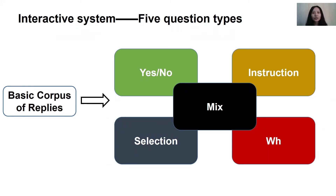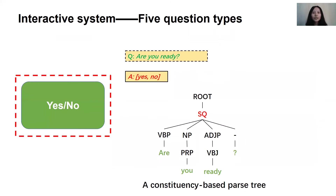We randomly interacted with 10,000 skills and collected the output as the basic corpus of replies. We divided these into five types according to the way answers are generated: yes-no questions, instruction questions, selection questions, WH questions, and mixed questions. The first type is yes-no questions, which expect answers of yes or no — for example, 'are you ready?' Here is the corresponding constituency-based parse tree, which is used in NLP techniques. We focus on the tag SQ to find yes-no structures.